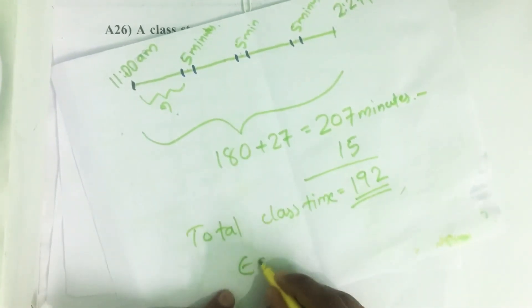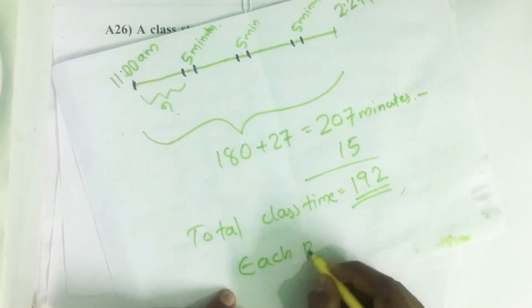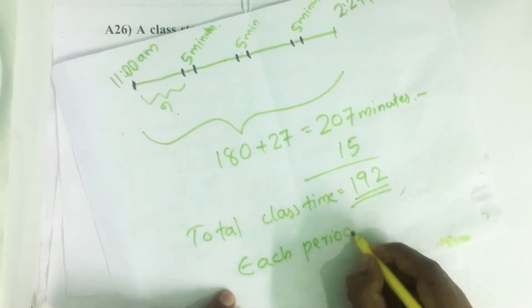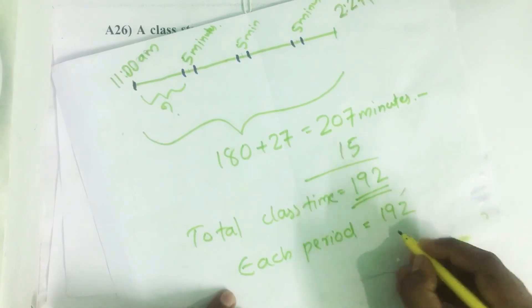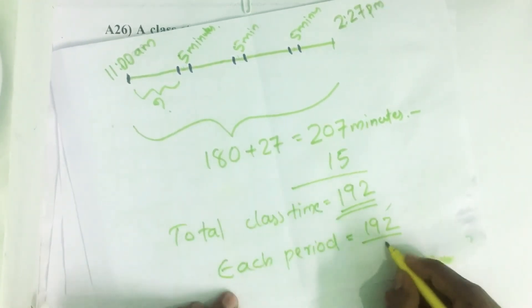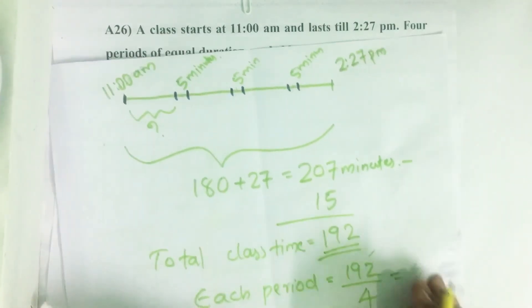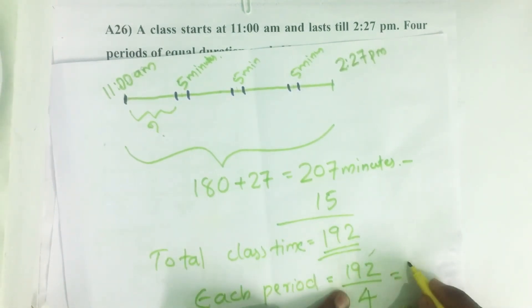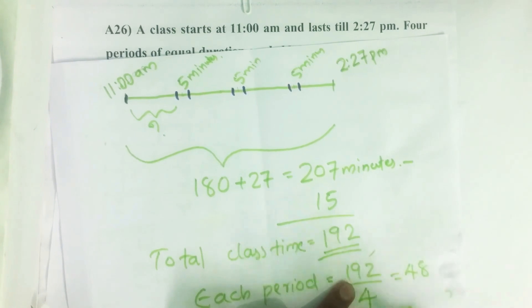Each period equals 192 divided by 4. 4 goes into 19 four times, that's 16. 4 goes into 32 eight times, that's 48. So each class duration is 48 minutes.